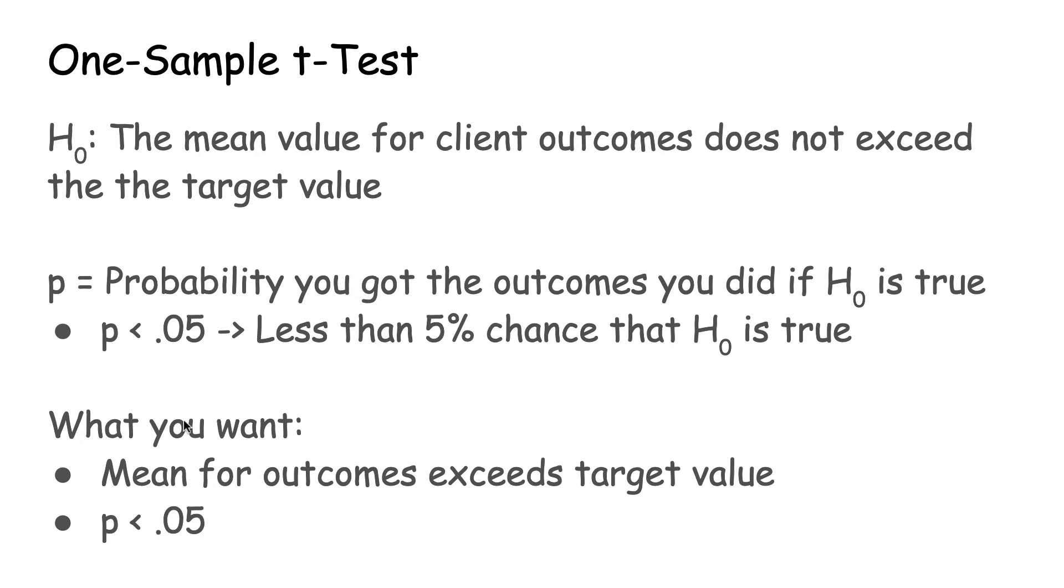Your p-value is the probability that you could have gotten a difference between the outcome value and target value at least as large as what you got if there is actually no difference between the two.